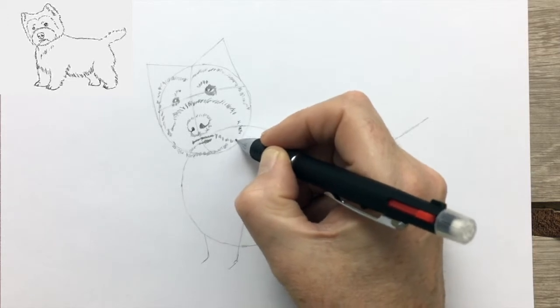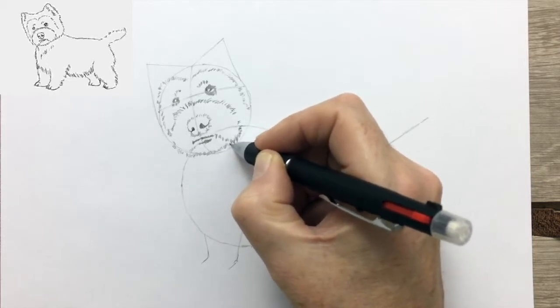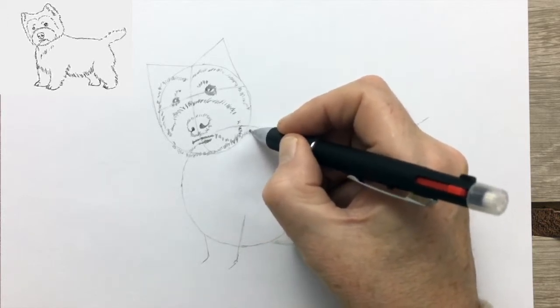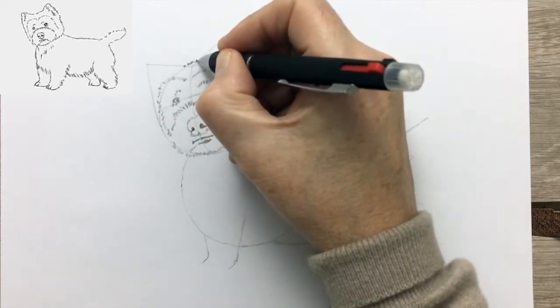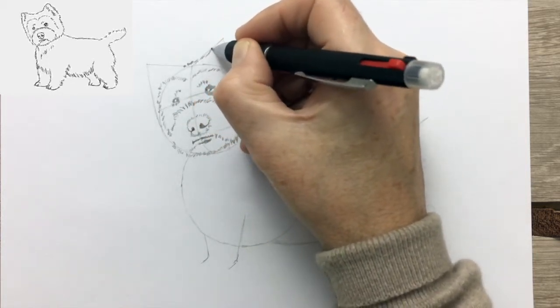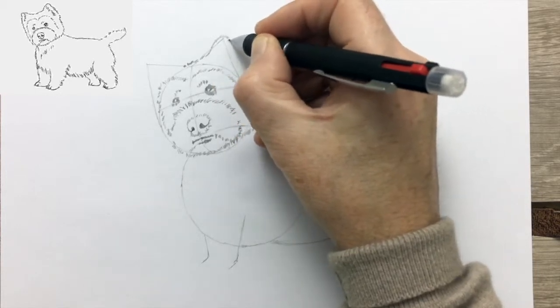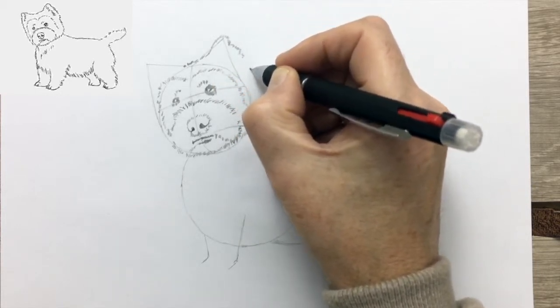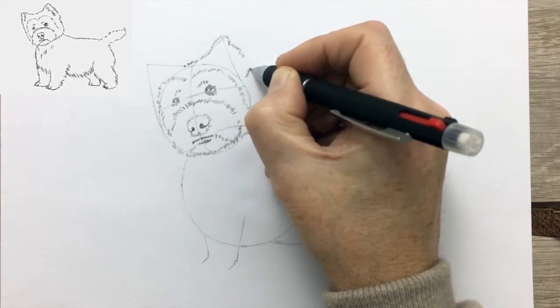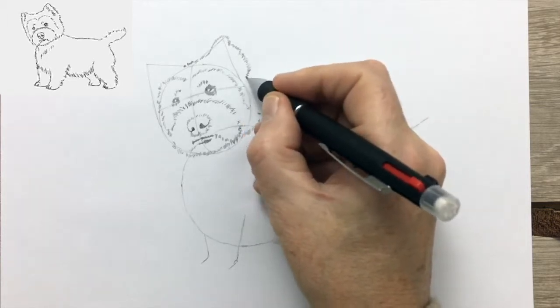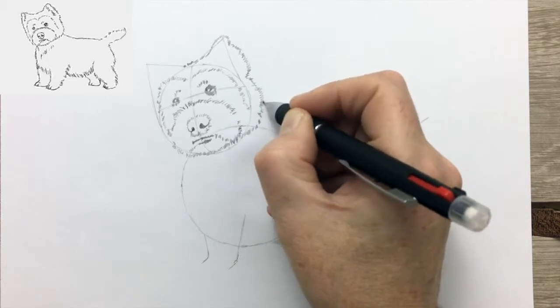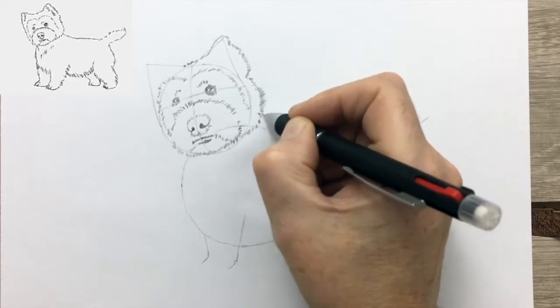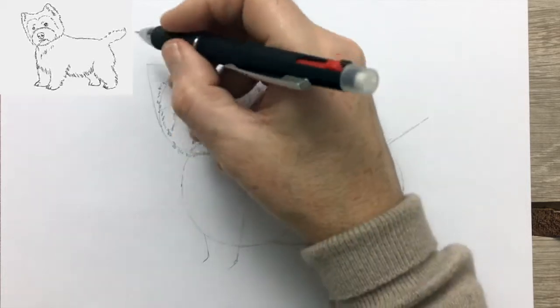Now I've added in the mouth and immediately you start to see the expression of our Westie, a rather quizzical inquiring look. And now the ears. This is where the triangle as a guide for the ears comes in useful. Much easier to draw our Westie when we've got our guides in.